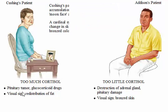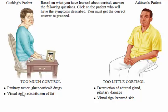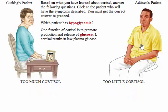Based on what you have learned about cortisol, answer the following questions. Click on the patient who will have the symptoms described. You must get the correct answer to proceed. Which patient has hypoglycemia? One function of cortisol is to promote production and release of glucose. Lack of cortisol results in low plasma glucose.